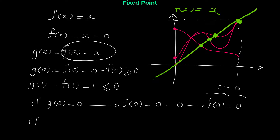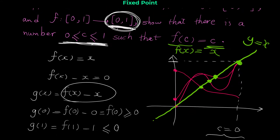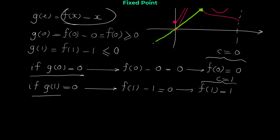Case 2: suppose g(1) = 0, not less than 0. Then f(1) − 1 = 0, so f(1) = 1. This means that the c we are looking for is c = 1. These two cases cover the equal signs in our inequality.